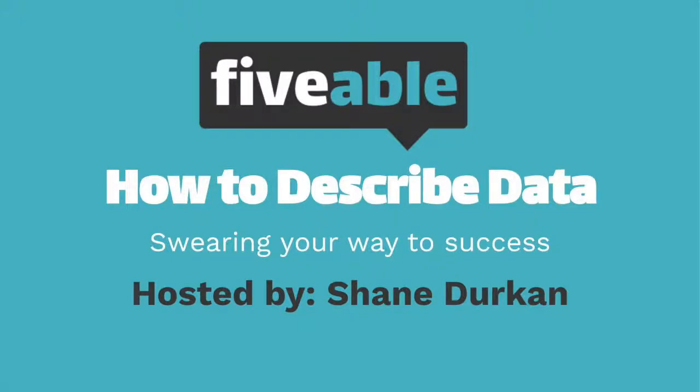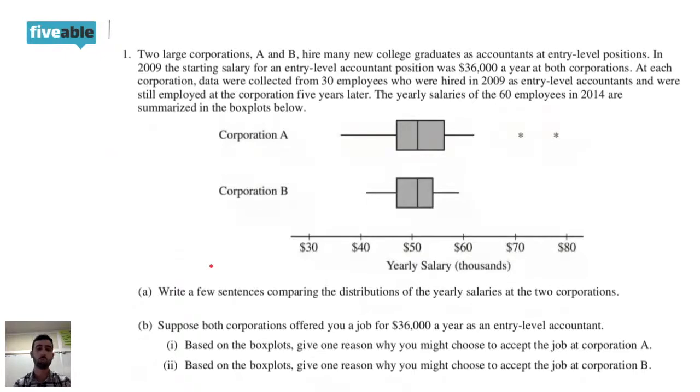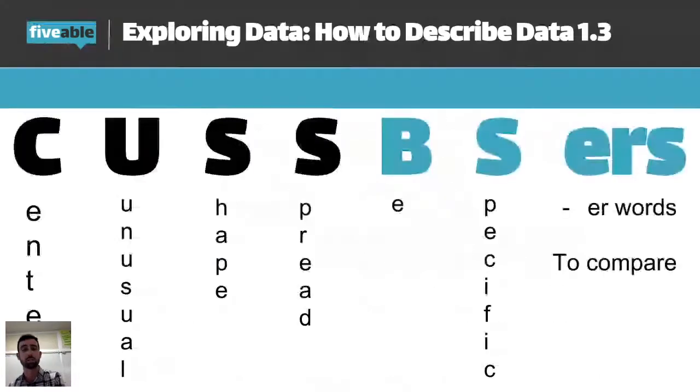Now we're going to get into how do we analyze data now that we have it displayed. So in AP stat, we are going to cuss and we are going to be BSers. This is what you're going to remember in order to get all the points on this type of question on the AP exam. When it comes to how to describe data, you want to think cuss and BS.